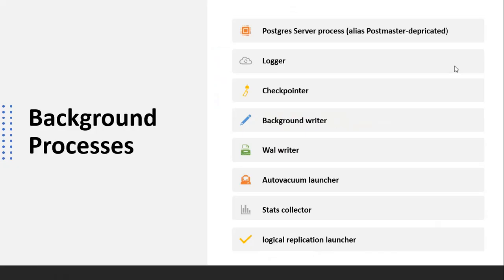Once the PostgreSQL server starts, it creates the PostgreSQL server process which initiates these background processes: logger, checkpointer, background writer, WAL writer, autovacuum launcher, stats collector, and logical replication launcher.